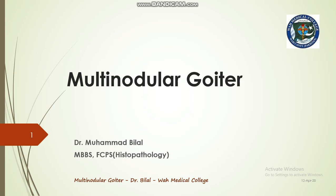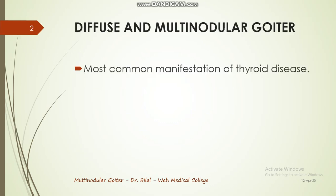Welcome to this first presentation. Our topic of discussion is multinodular goiter. We are going to discuss the gross picture and the microscopic picture and link it to the clinical picture as well. Knowing about this entity is very important because this is actually the most common manifestation of thyroid disease in the general population.